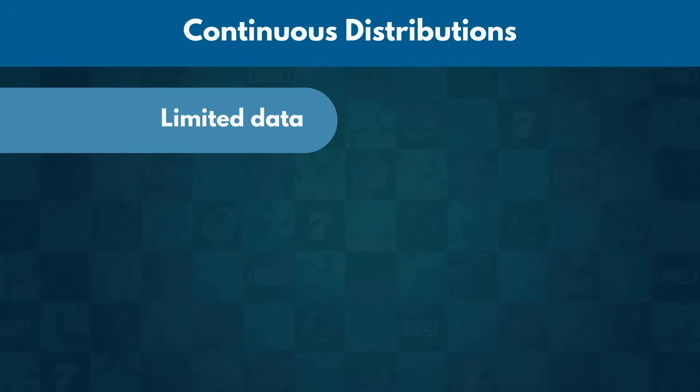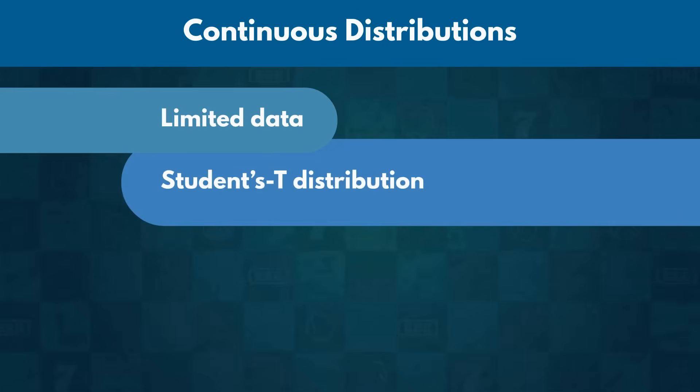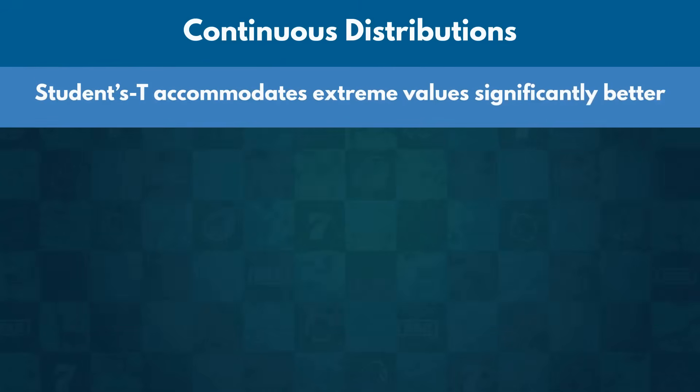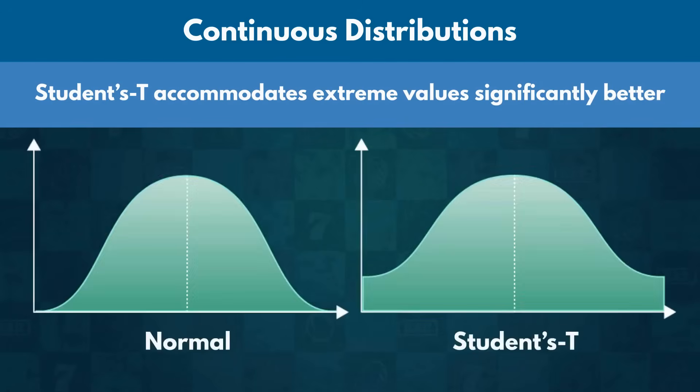Sometimes, we have limited data for events that resemble a Normal distribution. In those cases, we observe the student's T distribution. It serves as a small sample approximation of a Normal distribution. Another difference is that the student's T accommodates extreme values significantly better.